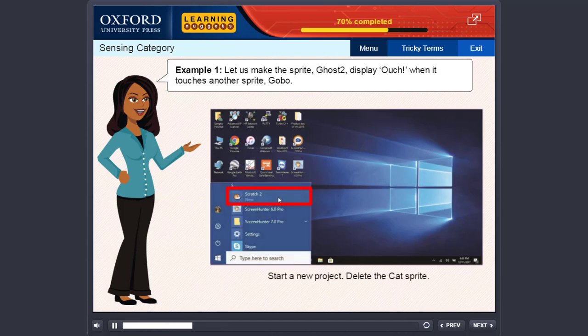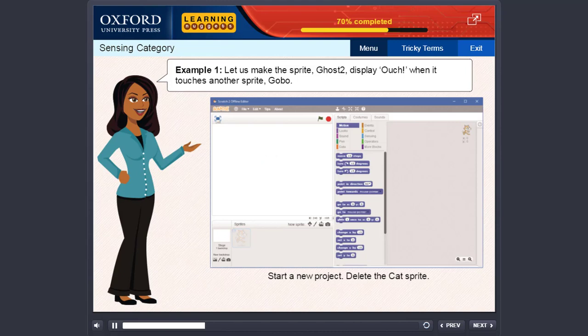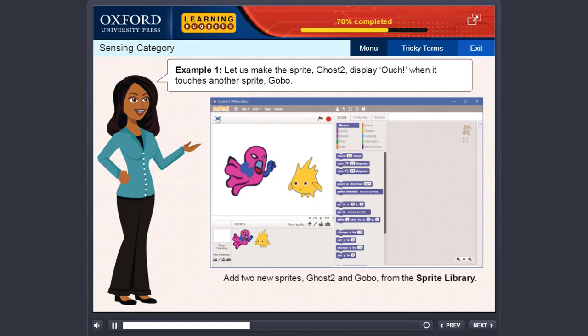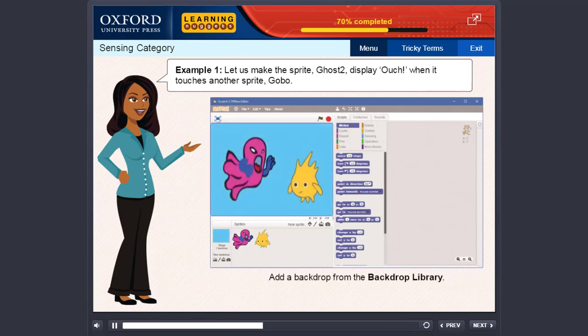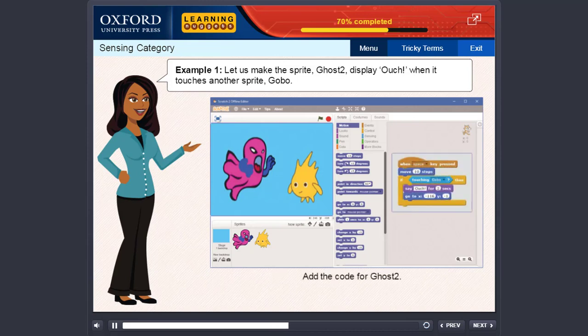Start a new project. Delete the cat's sprite. Add two new sprites Ghost2 and Gobo from the sprite library. Add a backdrop from the backdrop library. Add the code for Ghost2.